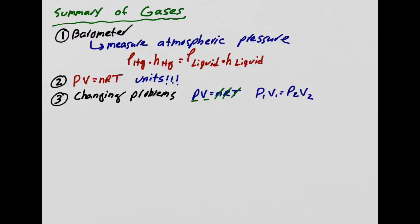When you read a problem, figure out if it's a changing problem. If it is, write down PV = nRT, cross out the variables that aren't changing, and find the relationship. Or if it's a straight PV = nRT, just plug it in — and don't forget units. We also talked about average kinetic energy, which is proportional to temperature, and only temperature.